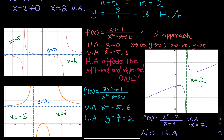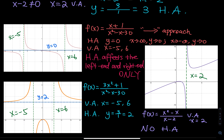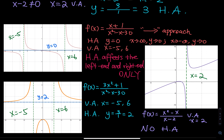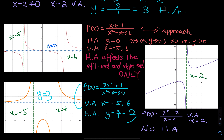For the second function — the blue one — there are two vertical asymptotes: one at negative 5 and one at positive 6. The horizontal asymptote — I need to correct a mistake here — is y equals 3, since 3 divided by 1 equals 3, not 2. So y equals 3 is the horizontal asymptote, and remember it affects the left-hand and right-hand behaviors only.